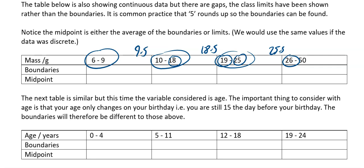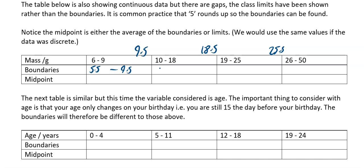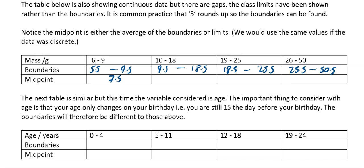So we're going to add in the boundaries. The boundaries are going to be 5.5 to 9.5, then 9.5 to 18.5, then 18.5 to 25.5, and then 25.5 up to 50.5. For the midpoints, you add the boundaries and divide by 2. So 5.5 plus 9.5, divide by 2, gives you 7.5.